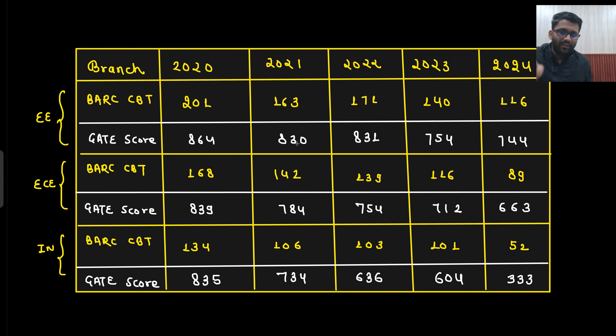Drastically the cutoff is reducing. First let's talk about GATE score. Here you can see last year it was 744 and it's about 754 here. For Instrumentation, very drastically it has reduced. Here it's 663, this is around 712. And even you see the score of CBT: 89, 116, previous year 140, 116, here 101.